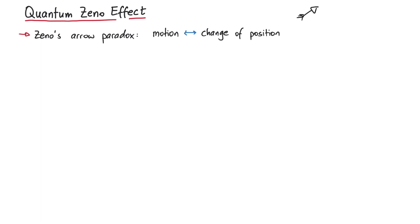But what if we consider an arrow that flies in the air? At every single point in time, the arrow seems to stand still. It does not change its position. So how can it fly through the air?